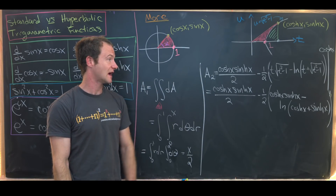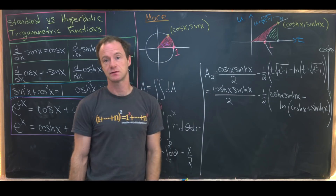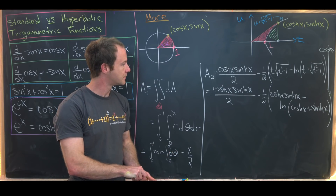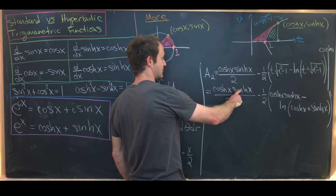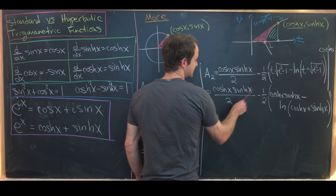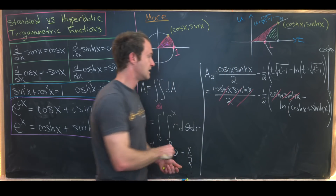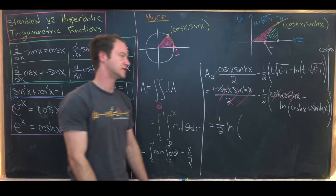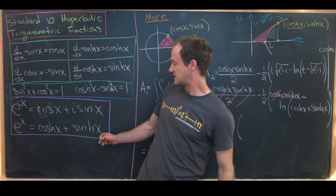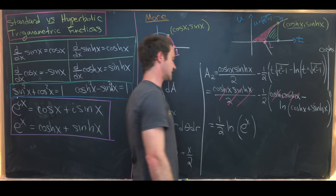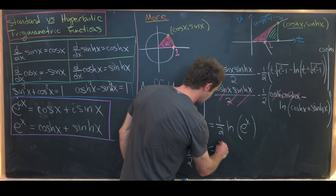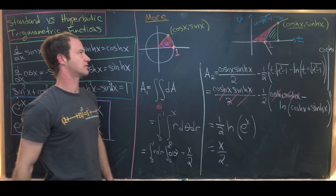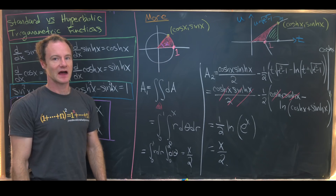When we plug in t equals 1, the term t times the square root of t squared minus 1 gives 1 times zero, which is zero, and the natural log of 1 is zero — so the lower bound contributes nothing. We then notice that we have one half hyperbolic cosine times hyperbolic sine minus one half of the same thing, so those cancel. Distributing the minus sign leaves one half times the natural log of hyperbolic cosine plus hyperbolic sine. But as we saw earlier, hyperbolic cosine plus hyperbolic sine equals e to the x, so we have one half natural log of e to the x, which equals x over 2 — the same area we found for the circle sector.